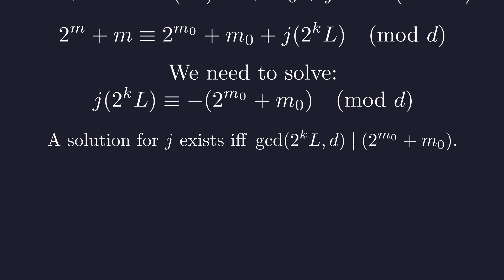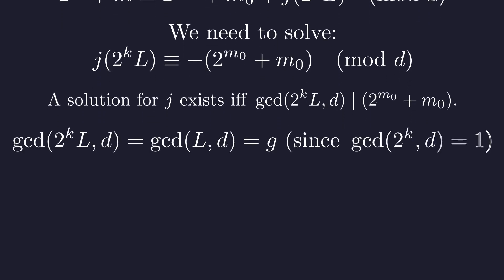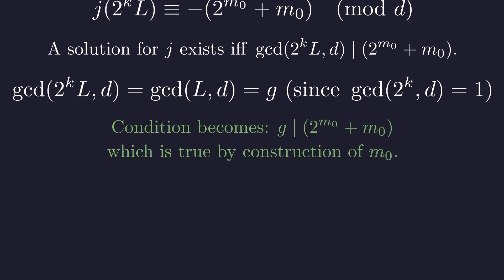A solution for j exists if and only if the gcd of the coefficient and the modulus divides the right-hand side. Because d is odd, it's coprime to 2 to the k, so the gcd simplifies to g. Our condition becomes g must divide 2 to the m0 plus m0, which is guaranteed by our choice of m0. So, a solution for j exists.